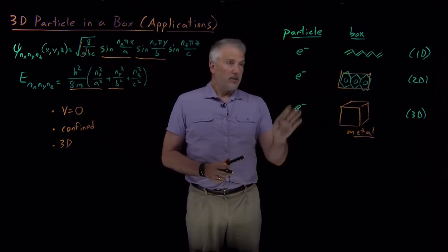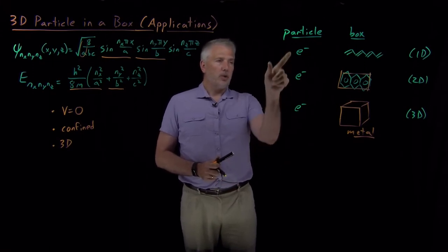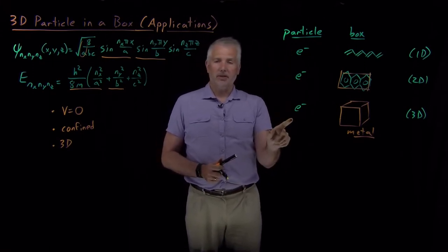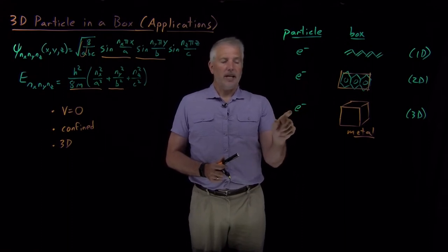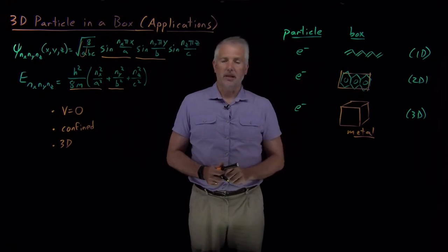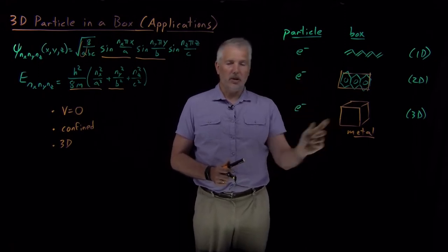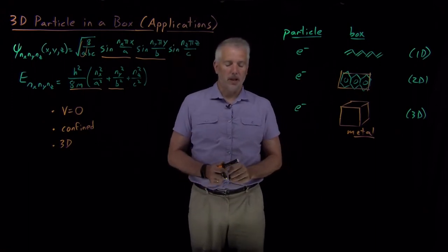And as the third, sorry, fourth case we'll consider, all of these cases have considered cases where the particle is an electron, and that makes a certain amount of sense because quantum mechanics deals with small objects and electrons are the smallest objects that chemists have to deal with routinely. So confining these small quantum mechanical electrons to a box is well described with these quantum mechanical models.